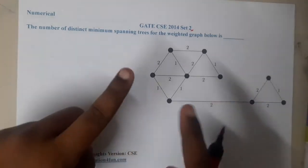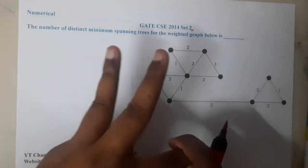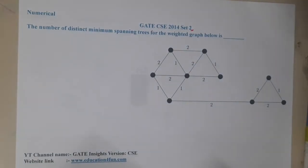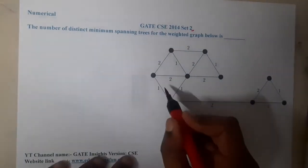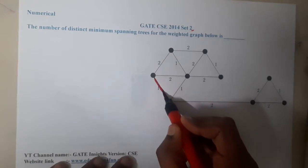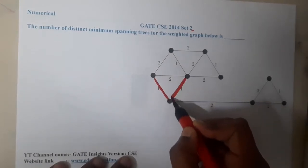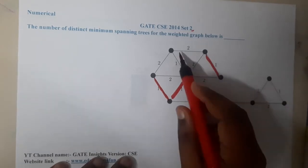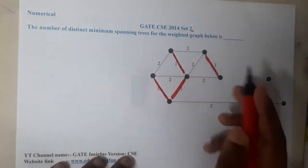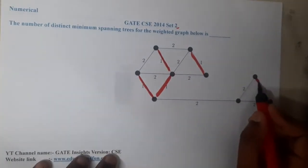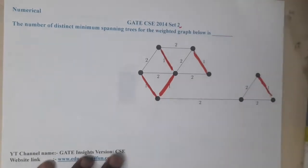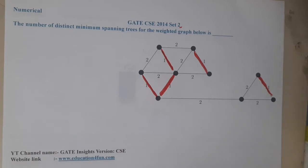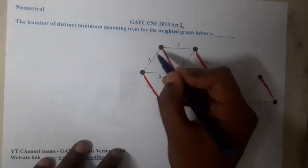First, let us identify the minimum values in the graph — one and two are the minimum values. When applying the minimum spanning tree algorithm, you start at the minimum value. So this edge with value one will be taken mandatorily, similarly this one, this one, and this one will all be taken mandatorily. So now we are left with options only for the edges with value two.